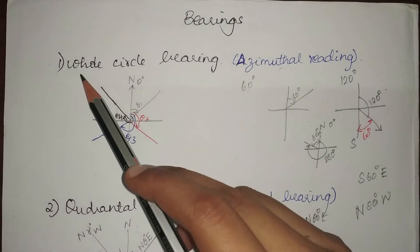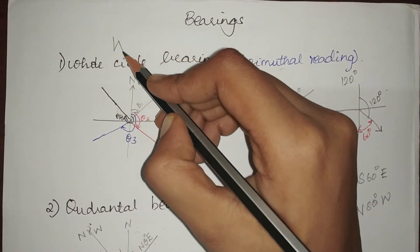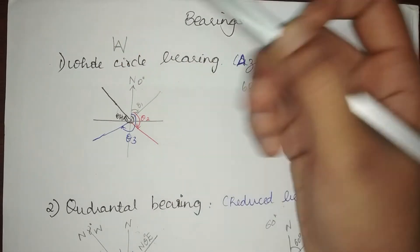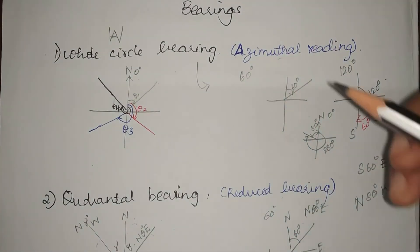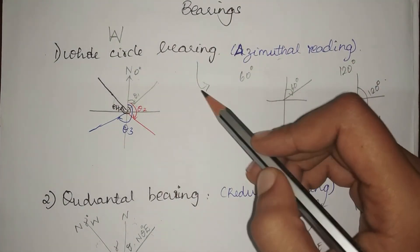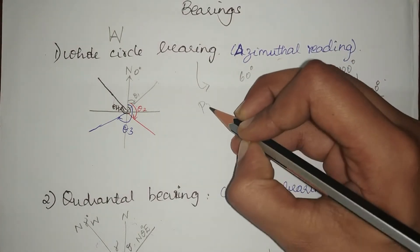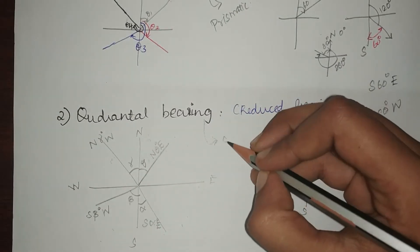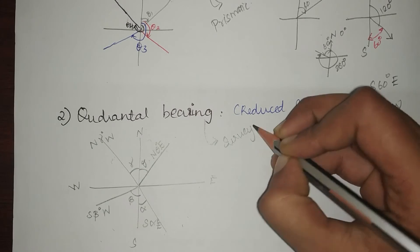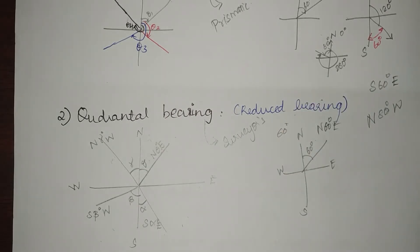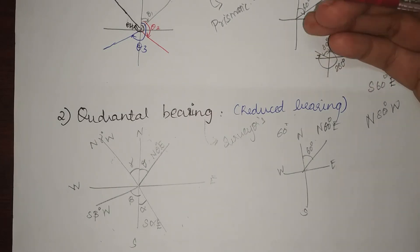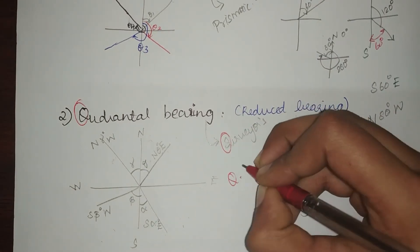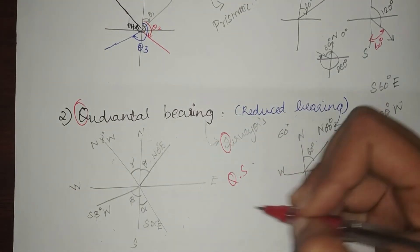A trick to remember: whole circle bearing starts with W and azimuthal starts with A — W contains an A, so that is how to keep it in mind. Another thing: whole circle bearing is always measured using a prismatic compass, whereas quadrantal bearing is measured using a surveyor's compass. A trick for that is QS — quantity surveying — Q for quadrantal, S for surveyor's compass.